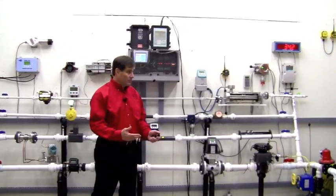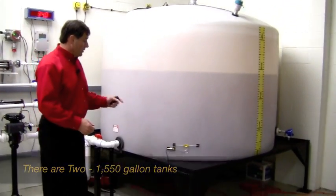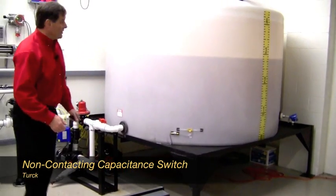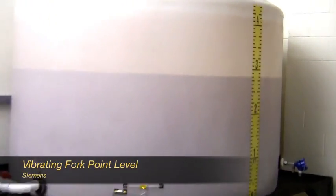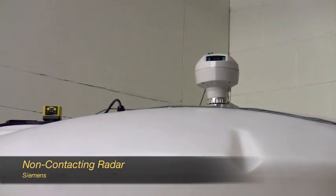Now let's show the lab starting with the right tank. Here at the bottom of the tank we have a non-contacting capacitive switch, moving to the top a vibrating fork, and a non-contacting microwave radar.